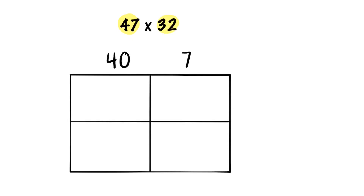Now, let's expand out 32. We know the 3 is actually worth 30 because it's in the tens place, and we know the 2 is just worth 2 because it's in the ones place. 30 and 2 makes 32.